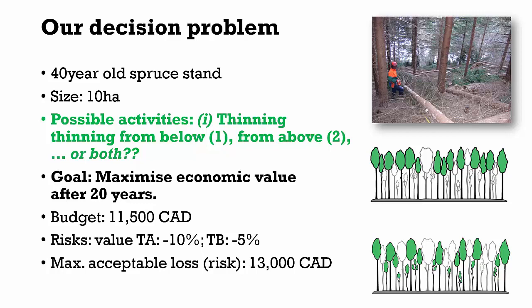If we carry out thinning from above, we calculate losses of 10% of our maximum harvest value. In total, the forest owner is willing to accept a maximum of 13,000 Canadian dollars in losses.